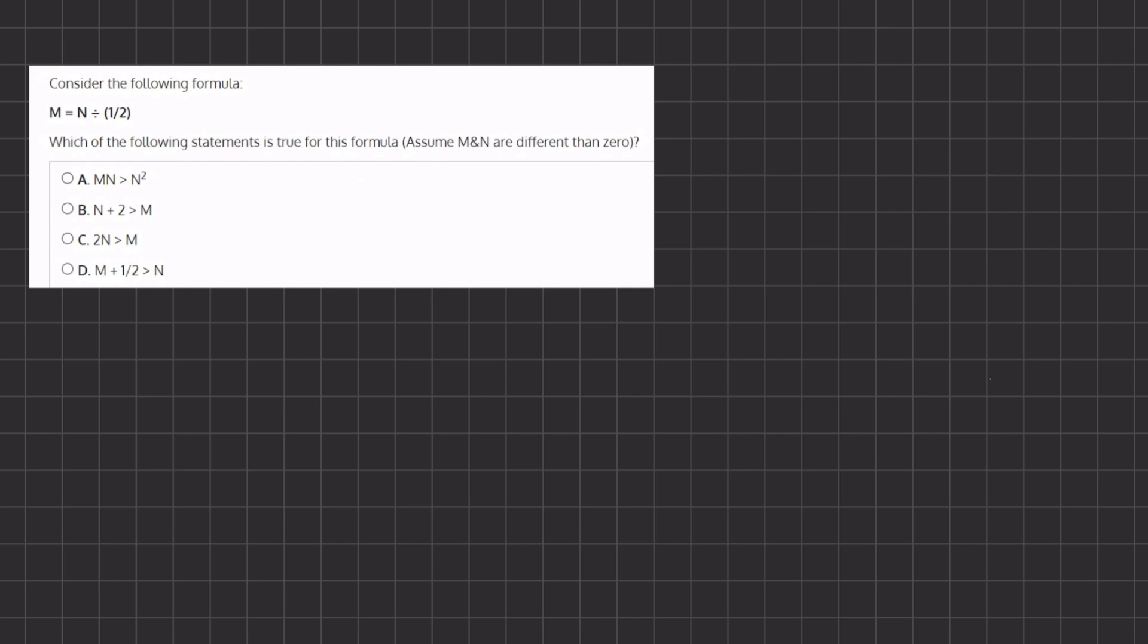Now if we take this expression M equals N divided by half, if we further simplify this, first we know that we have a denominator of 1 for this whole number N, and if we divide fractions we switch the division sign with a multiplication sign and we multiply by the reciprocal of the second term.